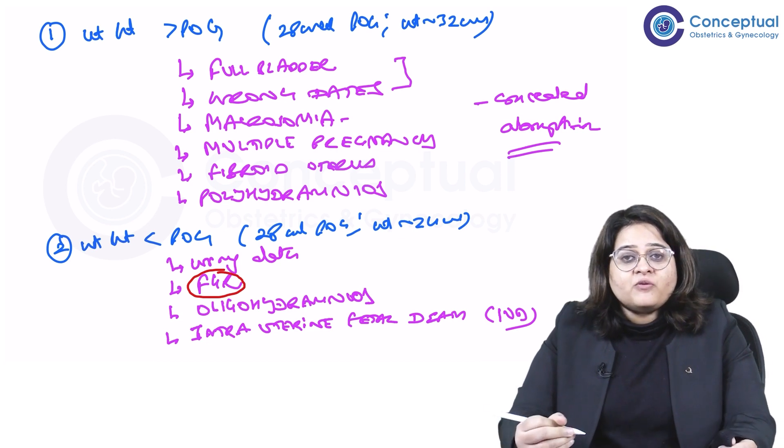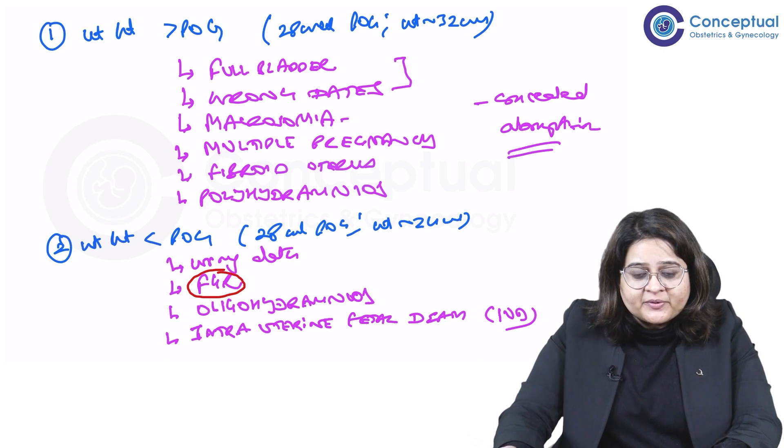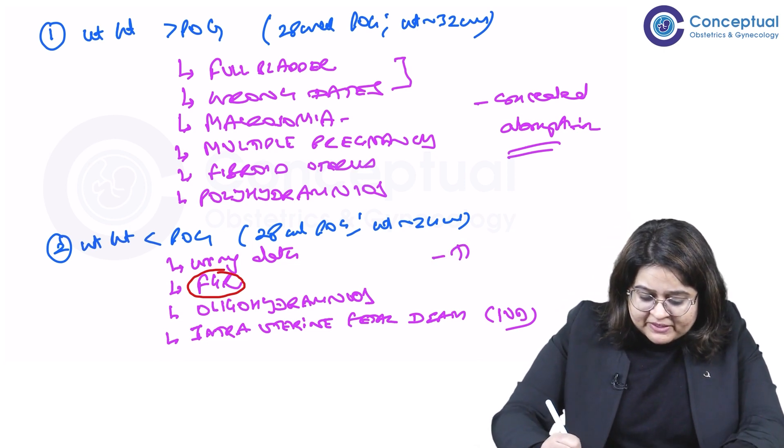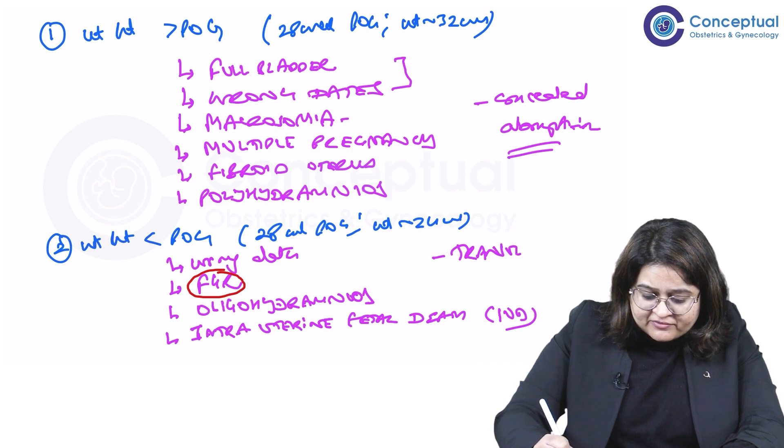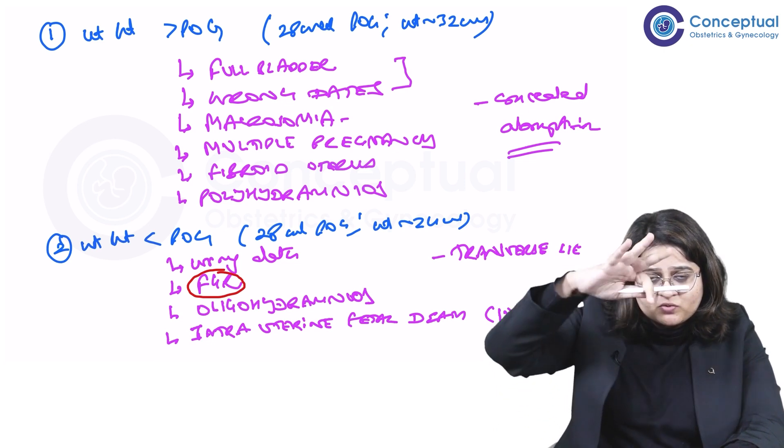One of the most common things we think of is actually fetal growth restriction. This performs our clinical basis for diagnosing FGR. So these are the causes, and I'll just add one more here to complete the list: a transverse lie. So when the baby is in transverse lie, it's lying down like this, not like this, it's like this.